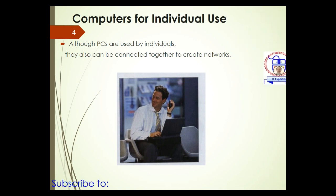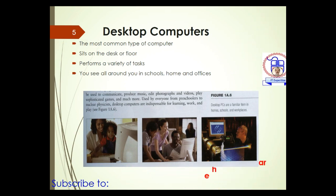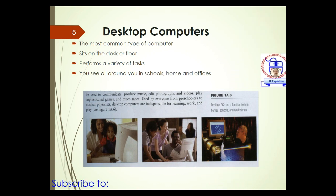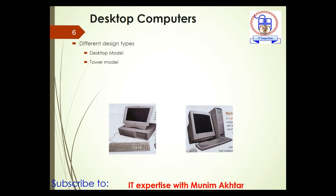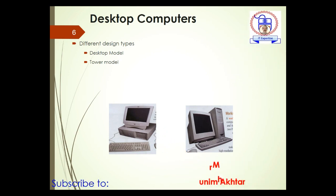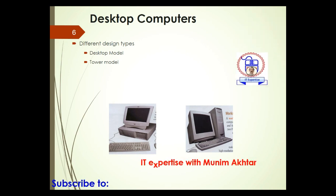Next is desktop computers — the most common type, normally used in homes. You can sit at a desk or on the floor and perform a variety of tasks. You see them in schools, homes, and offices. Desktop computers have two types: the desktop model and the tower model. The right-side picture shows the tower model, and the left-side picture shows the desktop model.